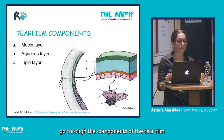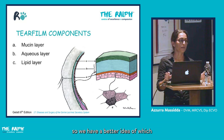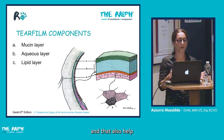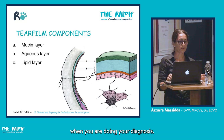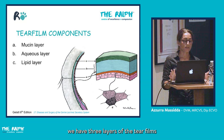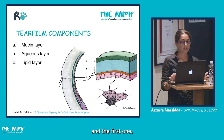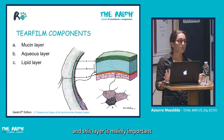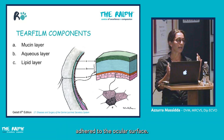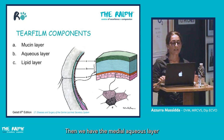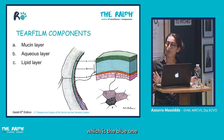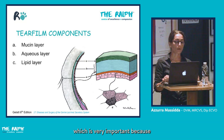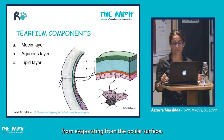Let's briefly go through the components of the tear film so we have a better idea of which part is produced by which glands, which also helps localize the problem during ocular diagnosis. We have three layers: the inner mucin layer, which keeps the tear film adhered to the ocular surface; the middle aqueous layer; and the superficial lipid layer, which prevents the aqueous layer from evaporating.